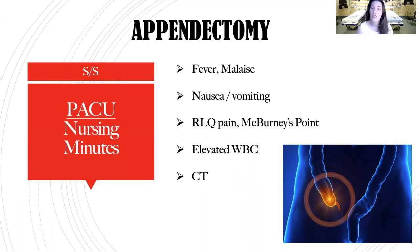If you do a CBC on them, they're probably going to have an elevated white blood cell count. If you do a CT scan, you're going to see some inflammatory processes on that appendix, and that's when the surgeon will come in, consult with the patient, and discuss their options for management.